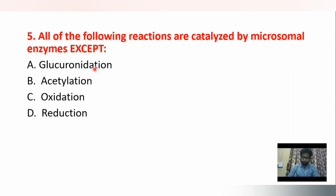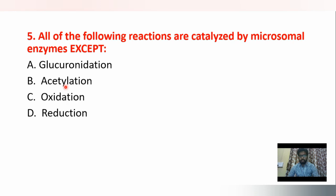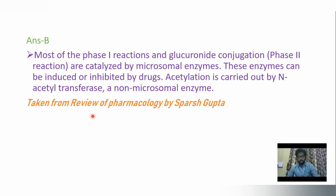Next question: all of the following reactions are catalyzed by microsomal enzymes except — options are glucuronidation, acetylation, oxidation, reduction. Most phase 1 reactions and glucuronidation conjugation are catalyzed by microsomal enzymes, and these enzymes can be induced or inhibited by drugs. Acetylation is carried out by N-acetyltransferase, a non-microsomal enzyme. So acetylation is the correct answer — it is the reaction not catalyzed by microsomal enzymes. Glucuronidation, oxidation, and reduction are all catalyzed by microsomal enzymes.